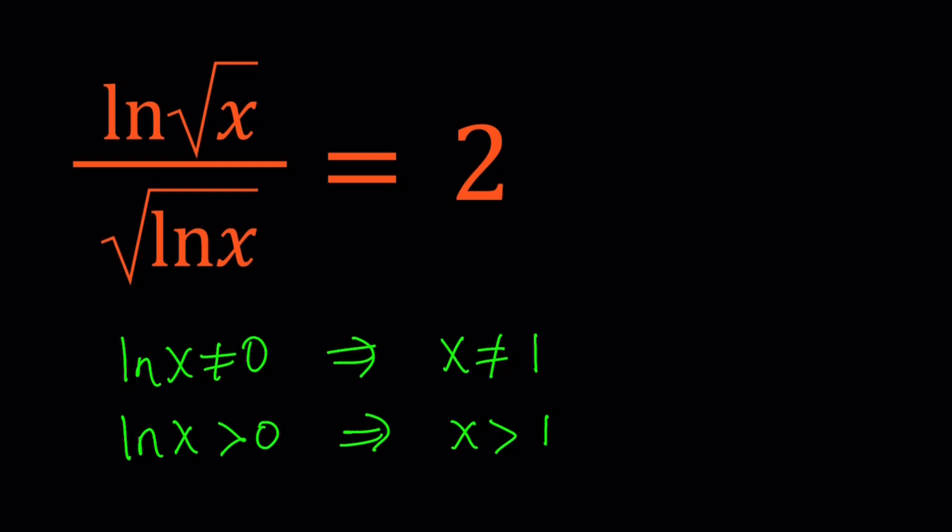So if x is greater than 1, we're good because x is not going to equal 1 in that case. But we also have the requirement that x is greater than or equal to 0, but that's already covered by x is greater than 1. So let's go ahead and cross-multiply now.